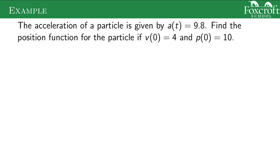That's when acceleration of a particle is a(t) equals 9.8. Maybe that 9.8 looks familiar to you from your physics days. I want to find the position function for the particle if v(0) is 4 and p(0) is 10. So I can go directly from acceleration to velocity by doing an antiderivative. So velocity is the antiderivative of acceleration, which is the antiderivative of 9.8, which turns into just 9.8t plus c.